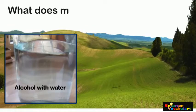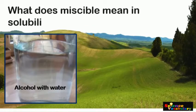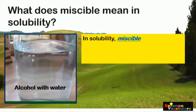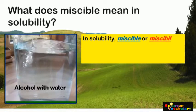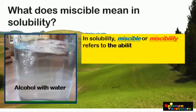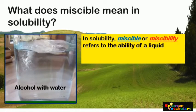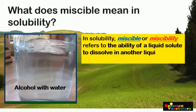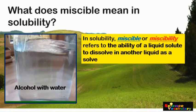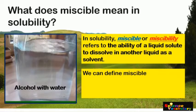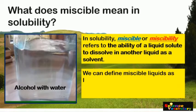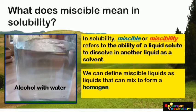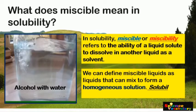What does miscible mean in solubility? In solubility, miscible or miscibility refers to the ability of a liquid solute to dissolve in another liquid. We can define miscible liquids as liquids that can mix to form a homogeneous solution.